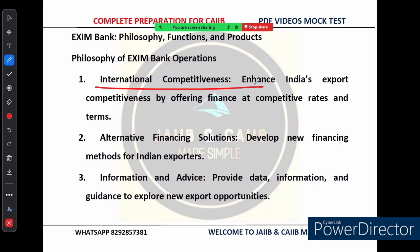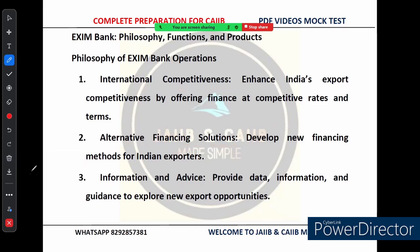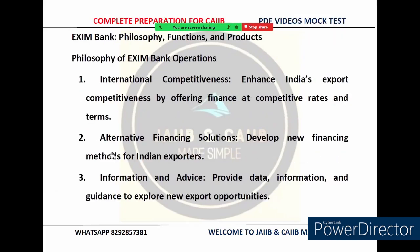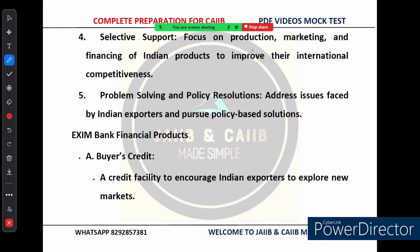The second pillar is alternative financing solutions — EXIM Bank focuses on creating new and innovative ways to finance export businesses. If traditional loans are not working for a company, EXIM Bank can offer alternative methods. Third is information and advice: EXIM Bank doesn't just provide loans; it also offers critical information, data, and guidance to help Indian exporters identify new opportunities in foreign markets. Fourth is selective support — not every product is supported equally. EXIM Bank carefully chooses which products to focus on, specifically supporting those Indian products that have the best chance of succeeding internationally.